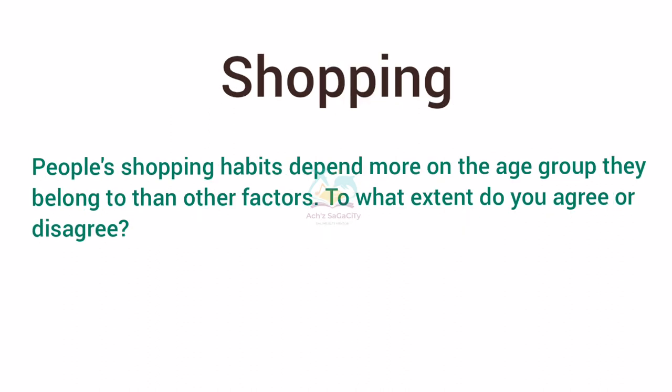Next topic is shopping: 'People's shopping habits depend more on the age group they belong to than on other factors. To what extent do you agree or disagree?' If you think many other factors also influence shopping habits, you can partially agree — this is a balanced opinion-type essay. Write about both the agreement side and also other factors in the remaining body paragraph.